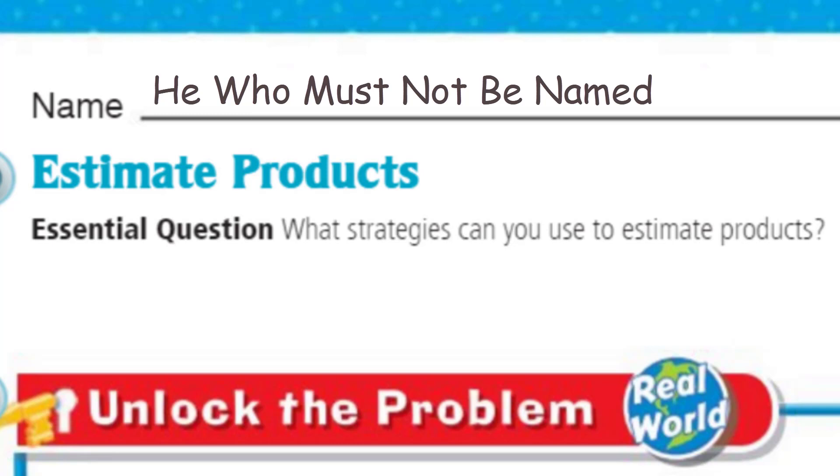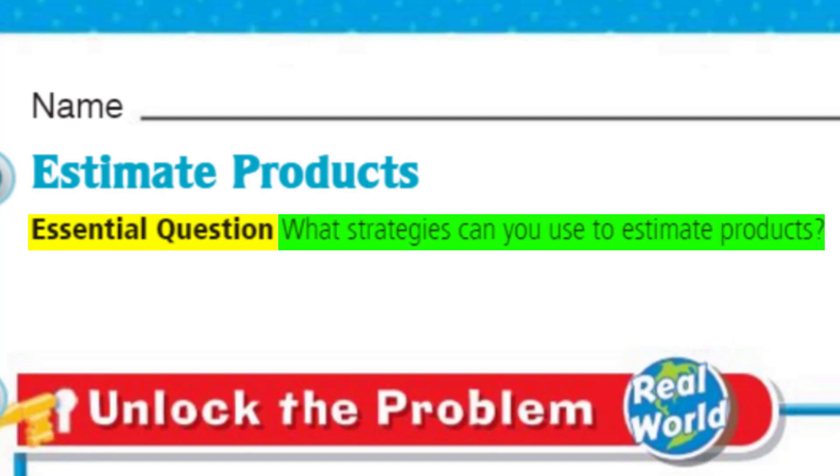Two words seem kind of confusing, but this lesson has this essential question that's going to help us. Here you can see the essential question. That purpose is about what strategies you can use to estimate products. Of course, we've talked about estimating, giving ourselves an about answer. The product, you know, an answer to a multiplication problem. That's right.